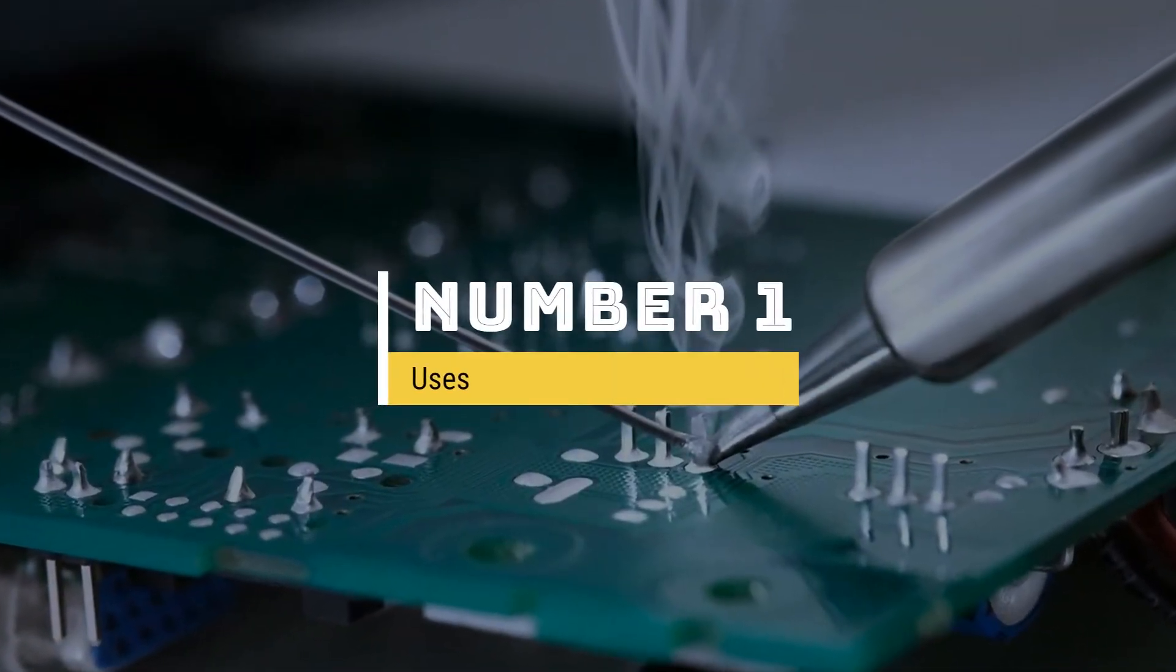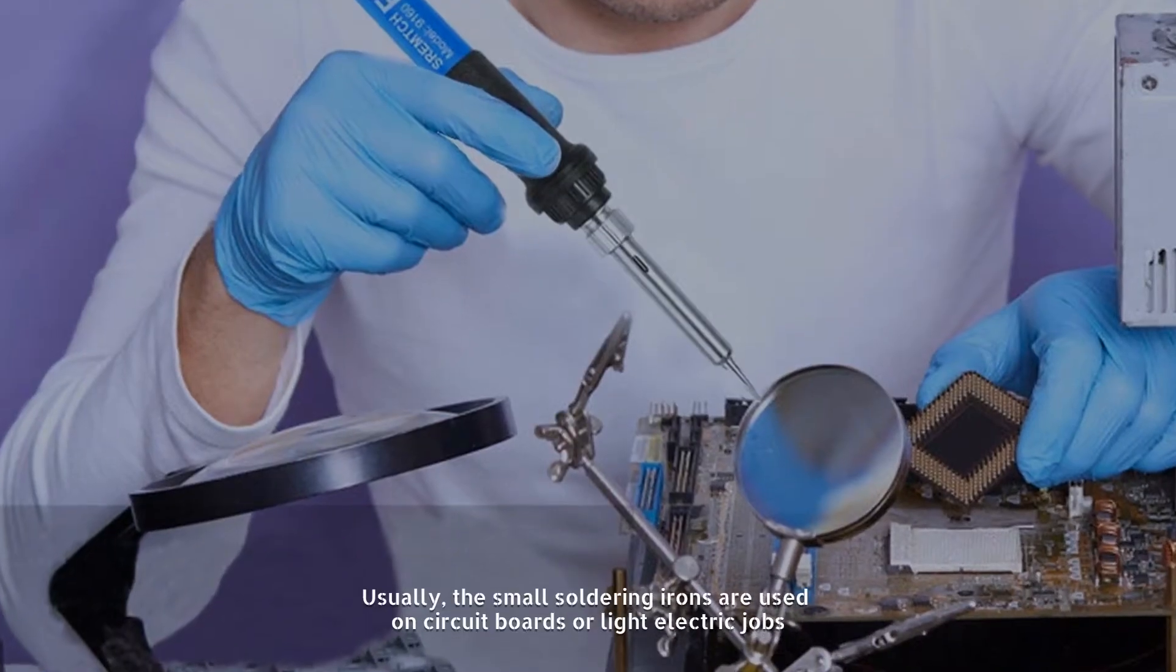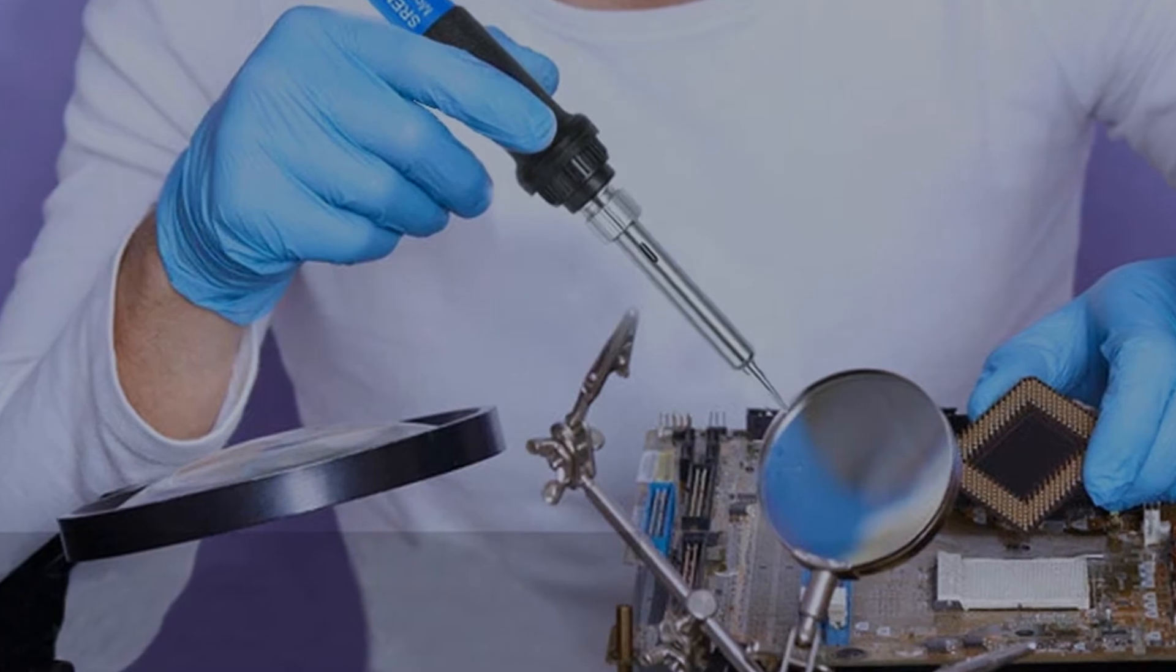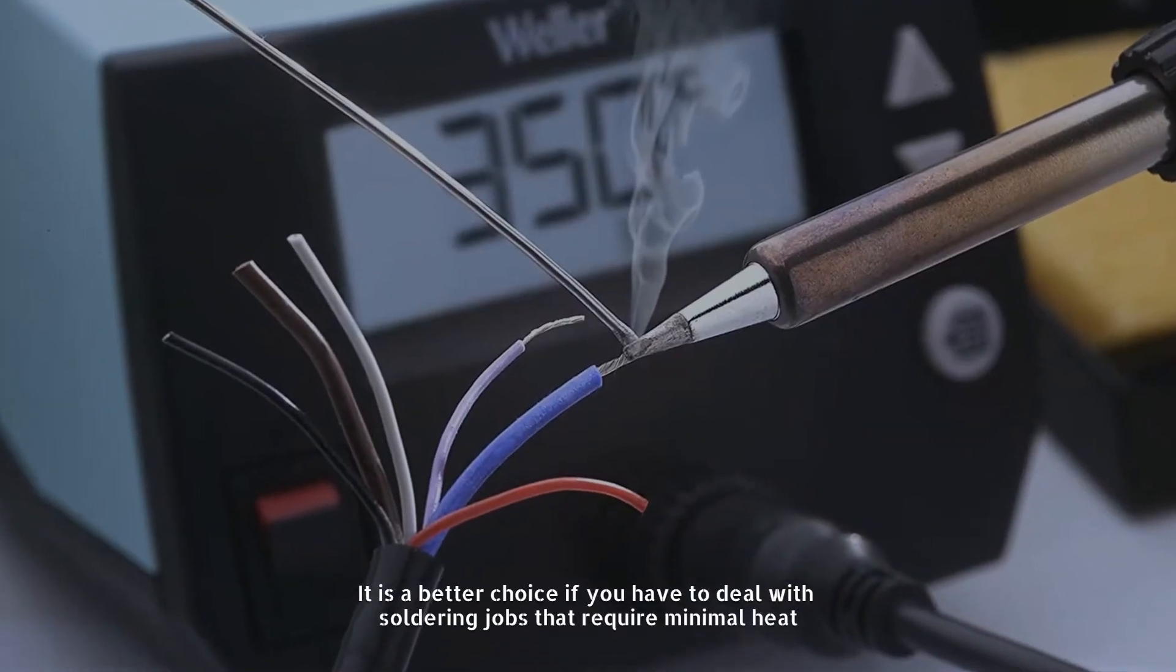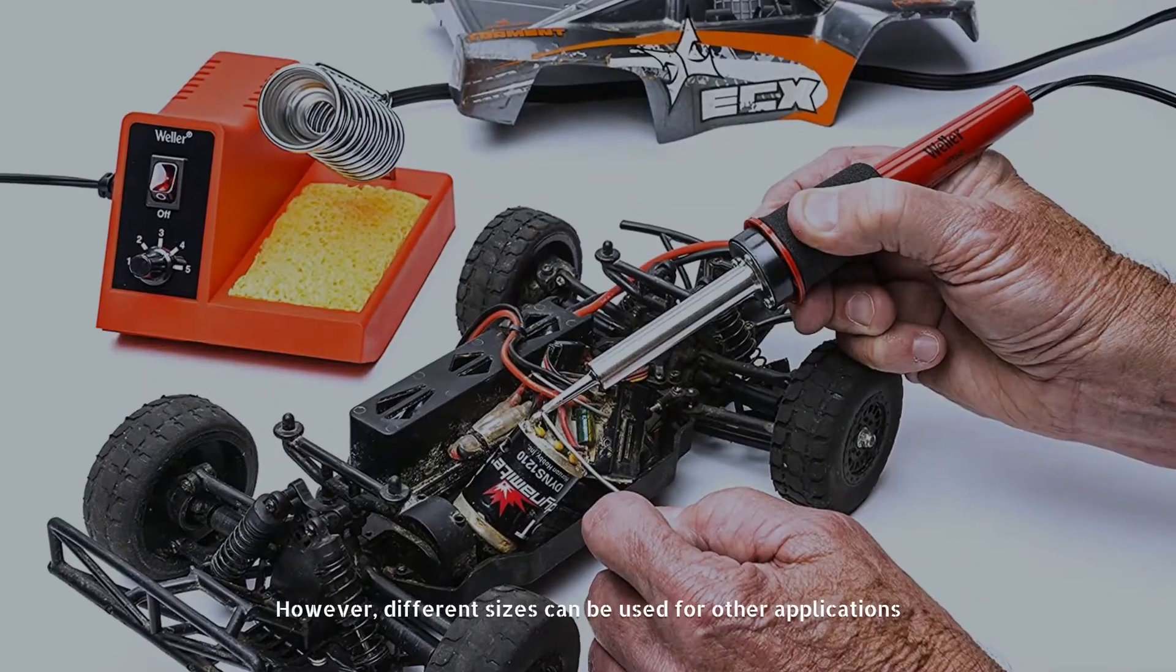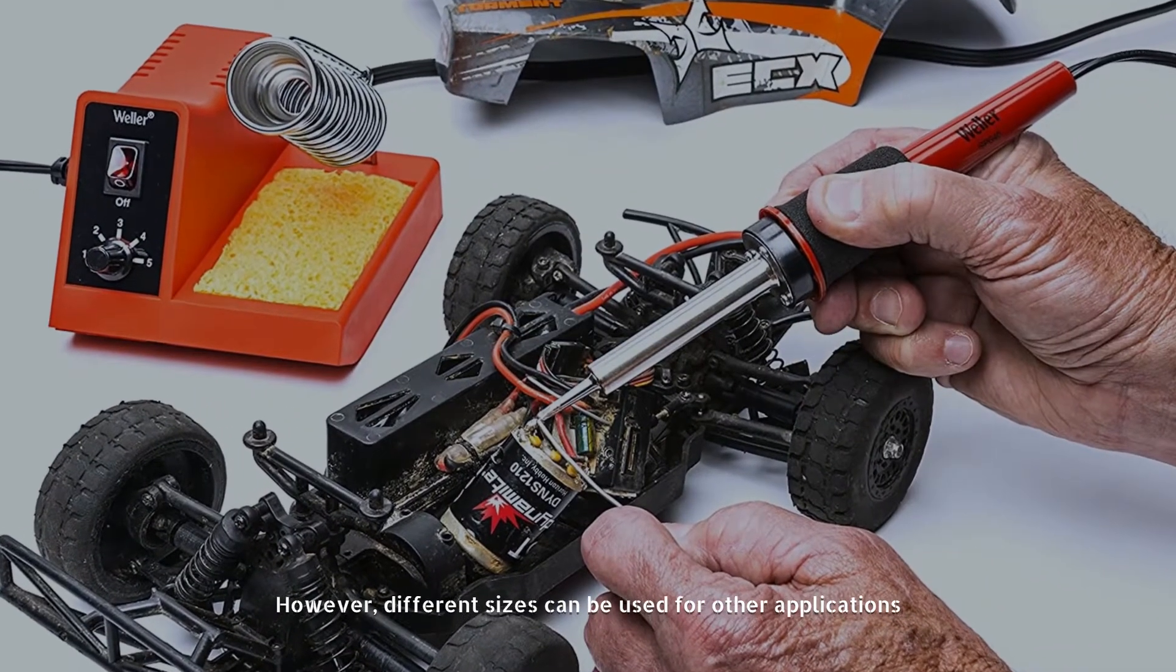Number one: Uses. Usually, small soldering irons are used on circuit boards or light electric jobs. It is a better choice if you have to deal with soldering jobs that require minimal heat. However, different sizes can be used for other applications, so check for the type of soldering iron before you choose one.